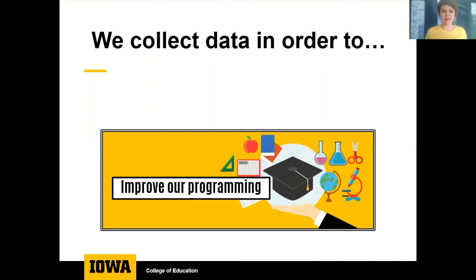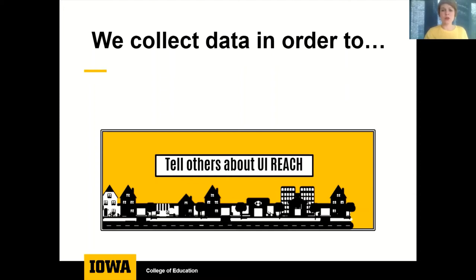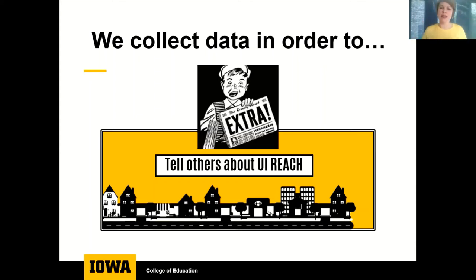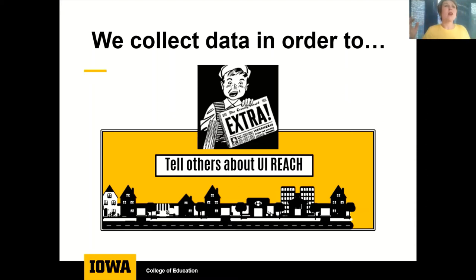We also collect data in order to improve our program. We want to make sure what we're doing works, that our students are successful, that our parents and guardians are happy, and that we are doing the best we can. Third, we collect data in order to tell others about the UI REACH program. When we want to tell policymakers and legislative officials that UI REACH changes lives, we need data. We need to share our employment outcome data, and parents should understand that our employment rate of UI REACH graduates is four times higher than individuals with disabilities who don't go to college. Data is important.